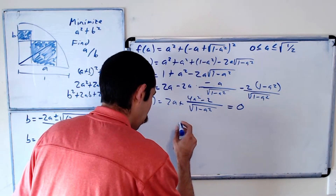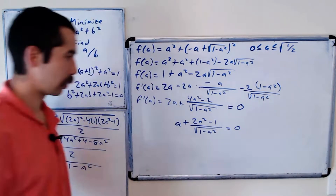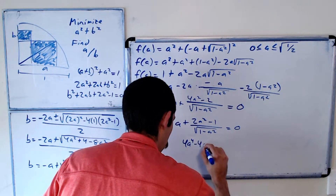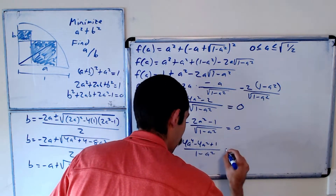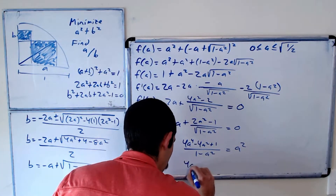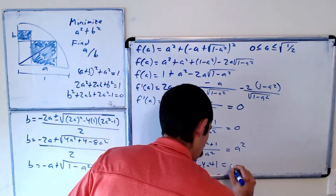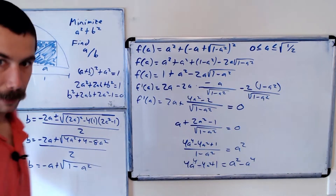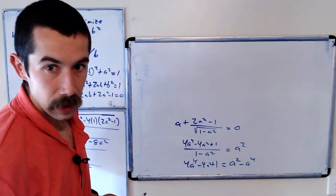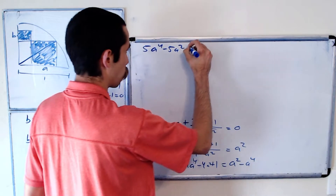Dividing by 2 and rearranging: a + (2a² − 1)/√(1 − a²) = 0. Moving a to the other side and squaring both sides gives (2a² − 1)² / (1 − a²) = a². Cross-multiplying and expanding: 4a² − 4a⁴ − 4a² + 1 = a² − a⁴. This simplifies to 5a⁴ − 5a² + 1 = 0.